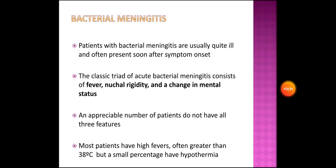However, fatal bacterial meningitis may also be indolent with a mild onset. Patients with bacterial meningitis are usually quite ill and often present soon after symptom onset. The classic triad of acute bacterial meningitis consists of fever, nuchal rigidity, and a change in mental status. An appreciable number of patients do not have all three features, but most patients have high fevers, often greater than 38 degrees Celsius.